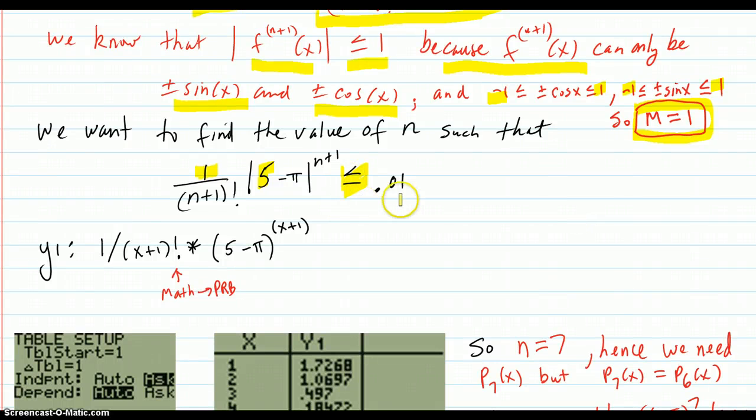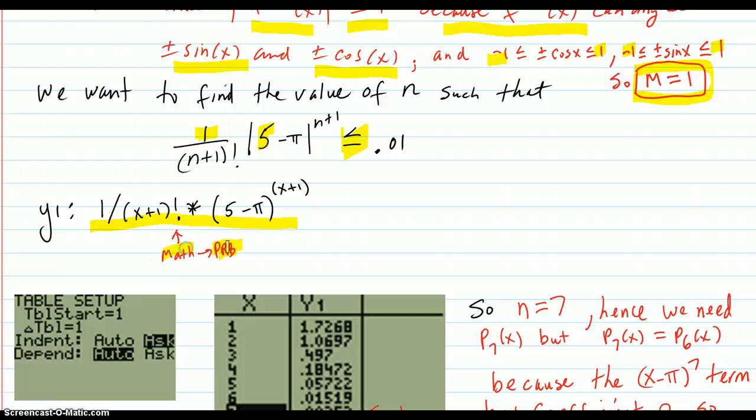So that's going to be kind of hard to solve for. So what you do is you put in y1 in your calculator. You put in that term there. And you get the factorial sign from math and the probability. And that's where it is. Math probability.